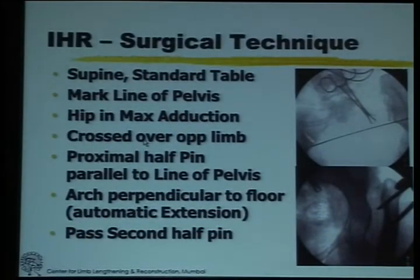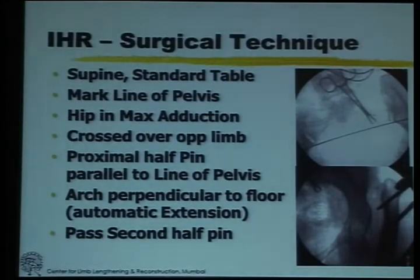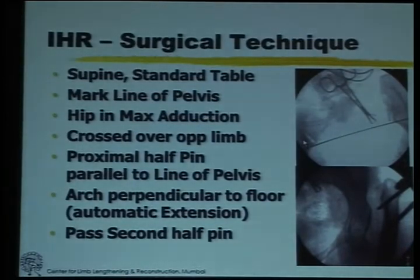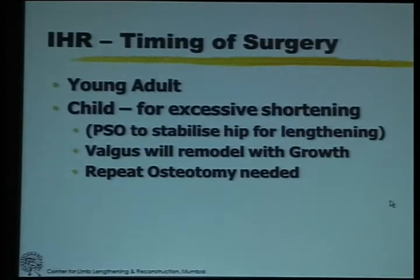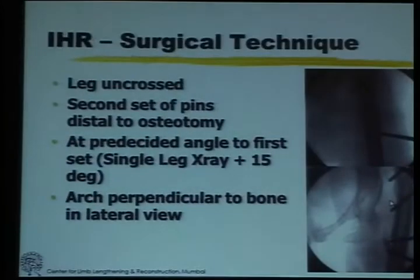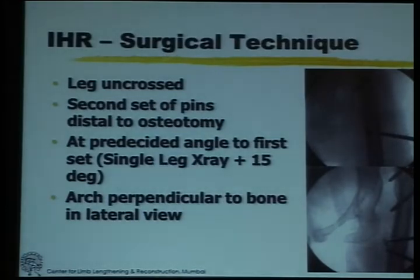This is how we do it. I use a patient supine on a standard table. We mark the line of the pelvis — you can see the wire marking the line between the bottom of the two sacroiliac joints, which is the same as the line of the pelvis. We put the hip in maximum adduction and the proximal half pins are put in parallel to this line. Two pins are put in the proximal fragment. The leg is then straightened and the second set of pins is put in distal to the planned osteotomy site at an angle predetermined from the x-ray.